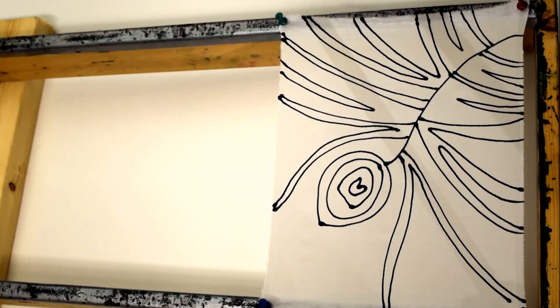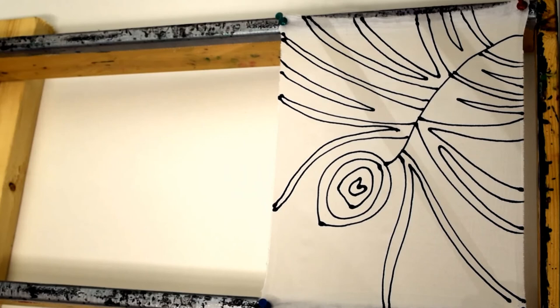So the lighter the silk, the thinner the gouda can be. Now this is finished here. It's still wet. It needs to dry and then I'm going to do some silk painting.